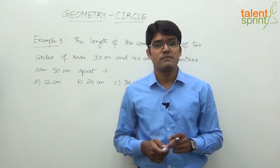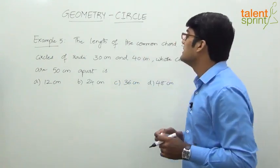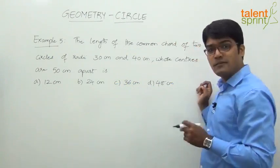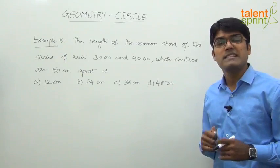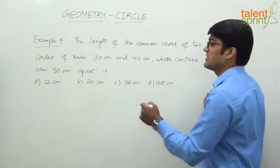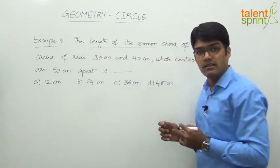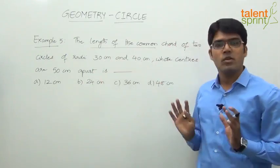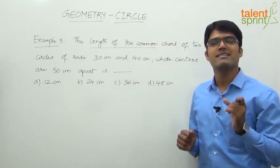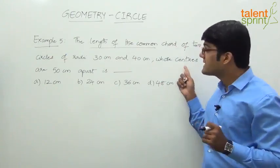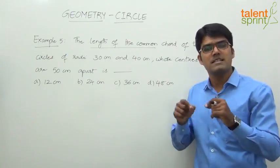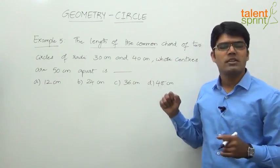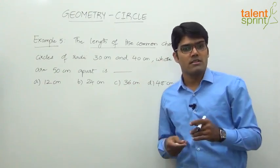Let's take example 5. The question is: the length of the common chord of two circles of radii 30 centimeters and 40 centimeters, whose centers are 50 centimeters apart, is — what? So we have to find out the length of the common chord for two circles with radii 30 and 40 centimeters respectively.